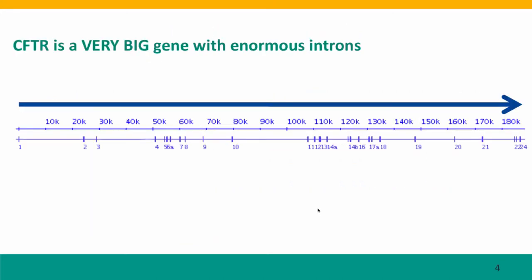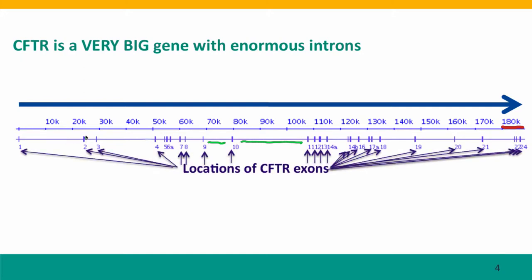This is a very big gene — 180,000 base pairs long. That doesn't all code for protein; most of the gene is, in fact, introns. All of these long thin lines represent intronic parts of the gene. Only the small vertical lines are the exons, and their thickness is proportional to their length relative to the length of the whole protein. They're pretty small.